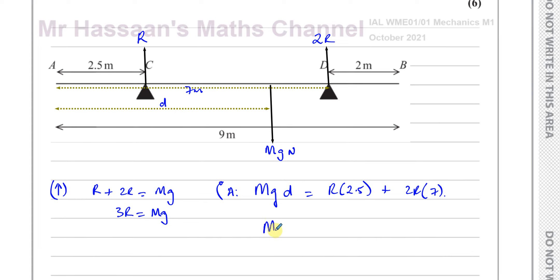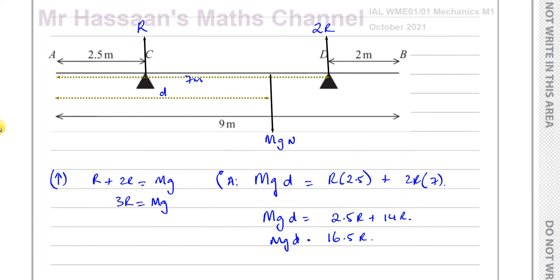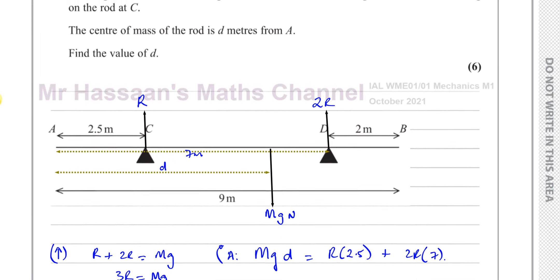So we can say Mg times D equals 2.5R plus 14R. So Mg times D equals 16.5R. Now we want to find the value of D.